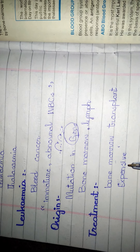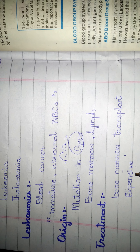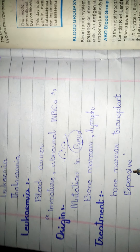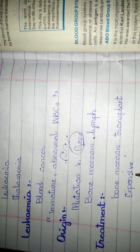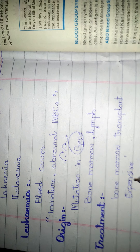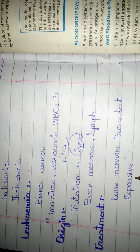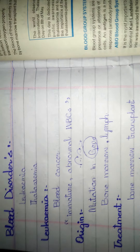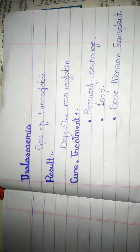If each and every person cannot do so, you can say this is not achievable. It is much more expensive. So this is all about leukemia. Now the next disease belongs to thalassemia.